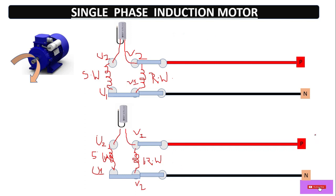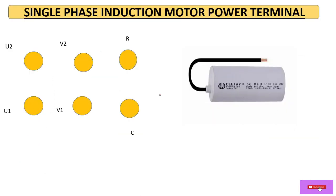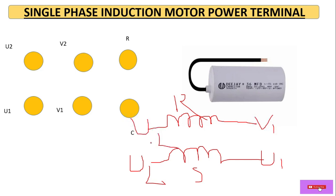In this condition, if we give power supply to this motor terminal, it will rotate in the reverse direction. The motor has a running winding and a starting winding. The starting winding has terminals U1 and U2, and the running winding has V1 and V2.